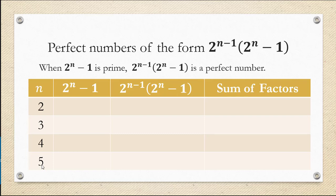So let's start with 2 being our number n. So we would have 2 squared minus 1, which is 4 minus 1, which is 3. That is a prime number. Now whenever this is prime, we know that the next number we calculate in the next column over is going to be perfect.